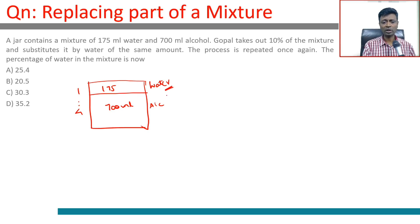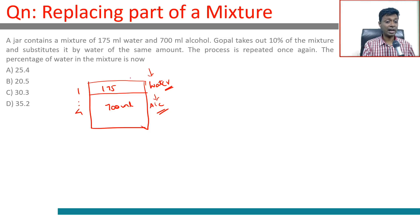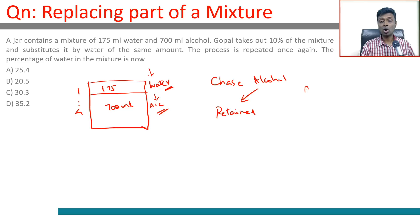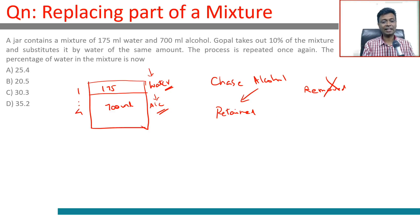For these questions, don't track water and alcohol together. Remember, ten percent is taken out — that means ten percent of water and ten percent of alcohol are removed, but then only water is added back, not alcohol. So chase alcohol first. Think about how much alcohol there is and how much alcohol is retained — not removed. I'm removing ten percent of the mixture, so ten percent of alcohol goes away and ninety percent is retained.